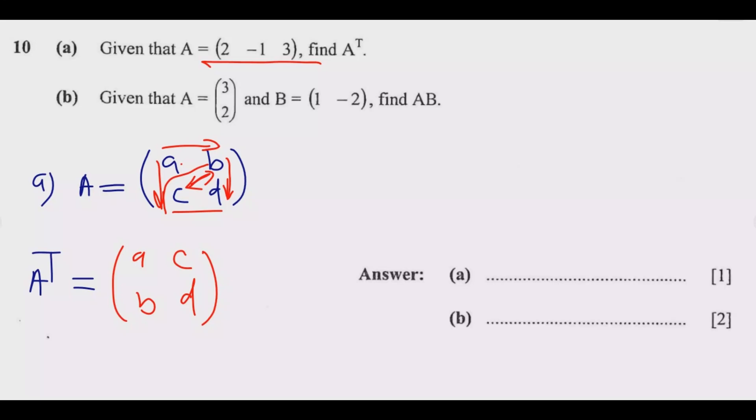Since A is a row matrix, it will just become a column matrix. So A transpose—just rotate it. It becomes 2, -1, then 3 vertically.